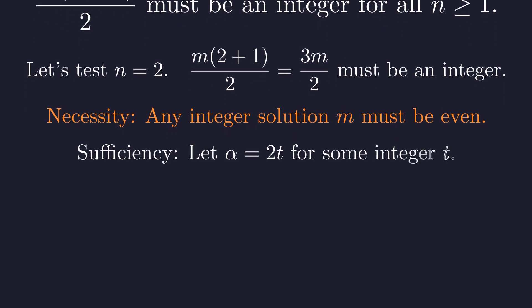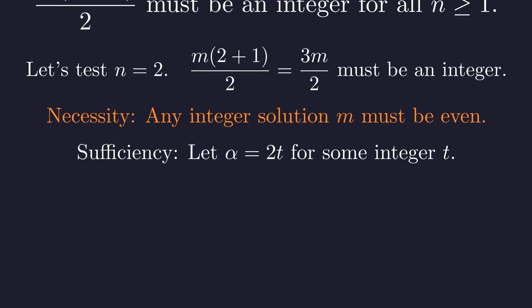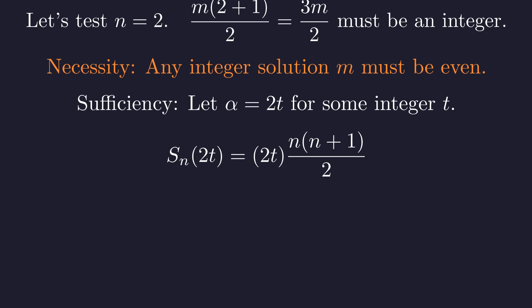Now, for sufficiency, does every even integer actually work? Let's say alpha is an even integer, which we can write as 2 times t for some integer t. We substitute 2t into our formula for the sum. And we can see that the 2s in the numerator and denominator will cancel. This leaves t times n times n plus 1. This expression clearly has n as a factor, so it is always divisible by n. This proves that all even integers are indeed solutions.